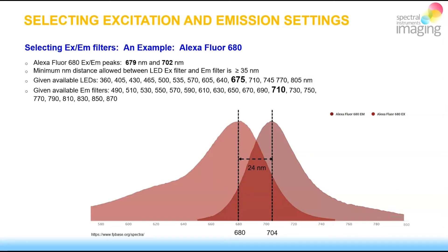What LED excite filter and emission filter combination should we use to capture as much of the absorption and emission spectra as we can? As previously suggested, let's select an LED excite filter slightly to the left of the absorption maximum and an emission filter slightly to the right of the emission maximum. On this slide I have provided the list of LEDs and emission filters available when working with a LogOx. To aim slightly to the left of 680 nanometer, the 675 LED excite filter is available to us, and to aim slightly to the right of the emission maximum, one can select the 710 emission filter.